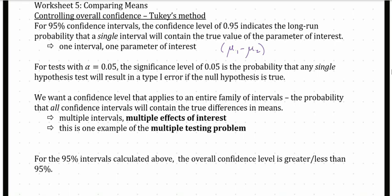We want a confidence level that applies to an entire family of intervals or an entire family of tests — the probability that all confidence intervals will contain the true differences in means. Because we are doing multiple tests and multiple intervals, there are multiple effects of interest: the difference between mu 1 and mu 2, but also mu 1 and mu 3, and mu 2 and mu 3.